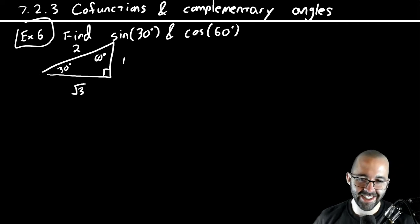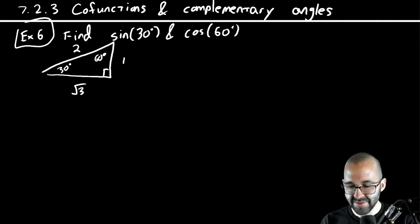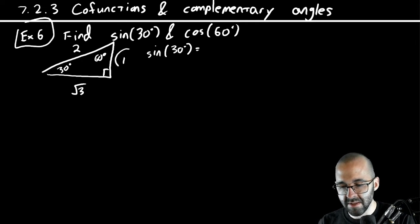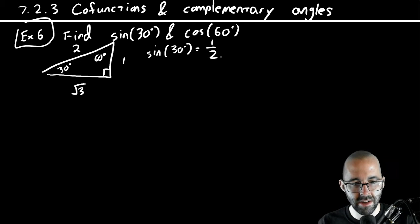I'm wearing a very fitting shirt for today. Let's look at the sine of 30 degrees. Well, the sine of 30 degrees is opposite over hypotenuse, it's one half. The cosine of 60 degrees, now we're over here. What's the adjacent side for 60 degrees? The adjacent side's over here.